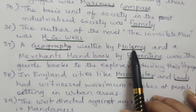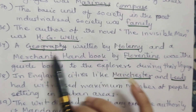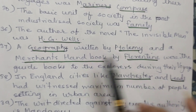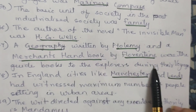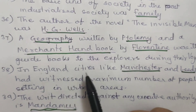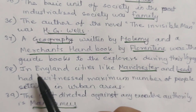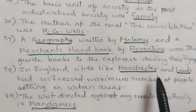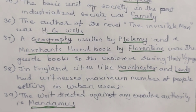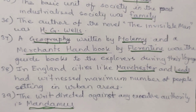37. A geography written by Ptolemy and a merchant handbook by Florentine were the guidebooks to explorers during the voyage. 38. In England, cities like Manchester and Leeds had witnessed the maximum number of people settling in urban areas.